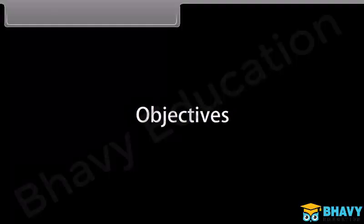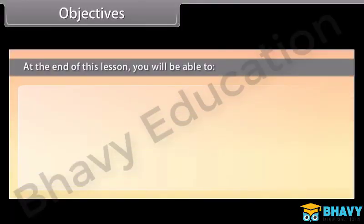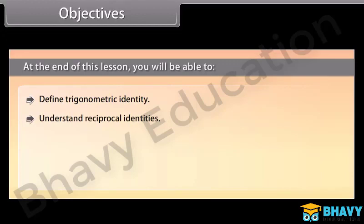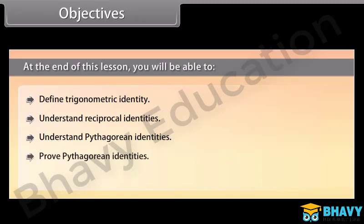Objectives. At the end of this lesson you will be able to: define trigonometric identity, understand reciprocal identities, understand Pythagorean identities, prove Pythagorean identities, and solve examples related to Pythagorean identities.